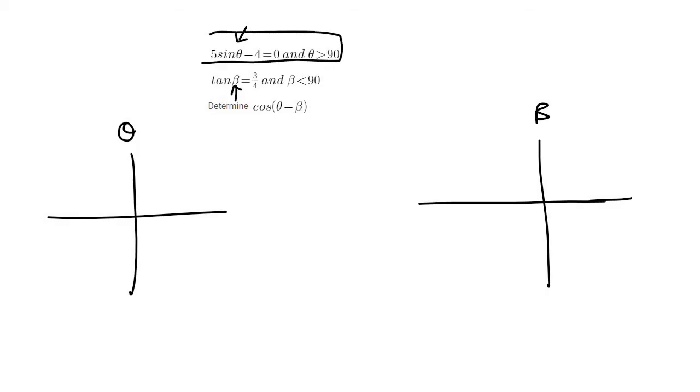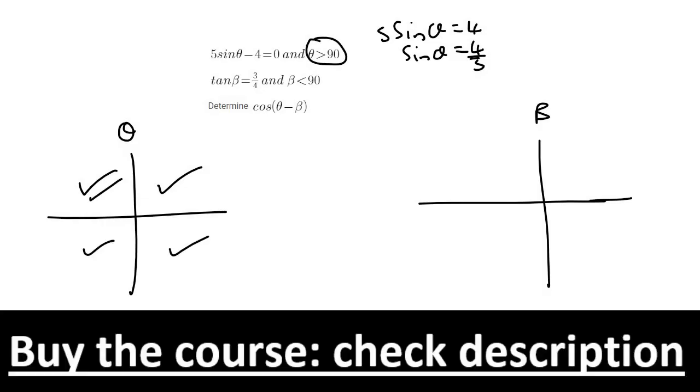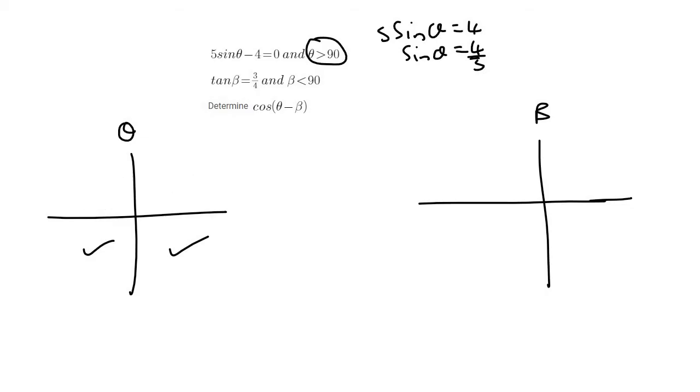So let's look at the first piece of information. If we had to rearrange everything, we'd get that 5 sin theta is equal to 4, and sin theta is then 4 over 5. So this means sin is positive. That could be here or here. Then they say that the angle, theta, must be greater than 90. So that could be here, here, or here. So then we choose quadrant number 2 because it satisfies both conditions.